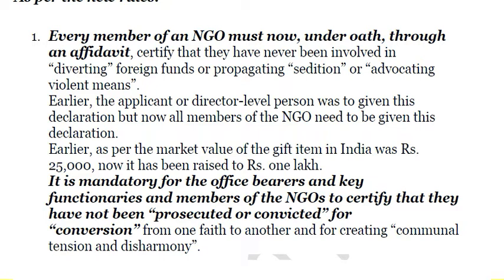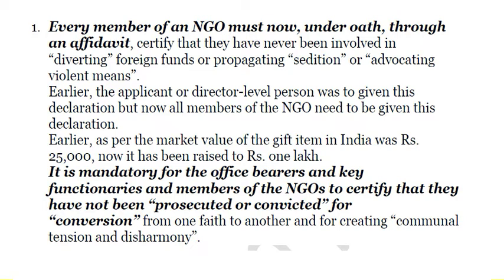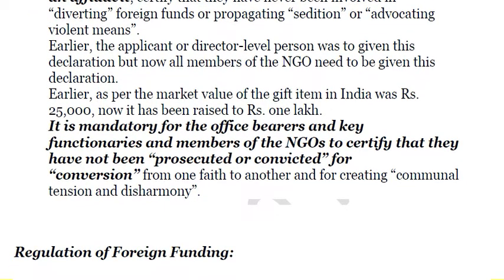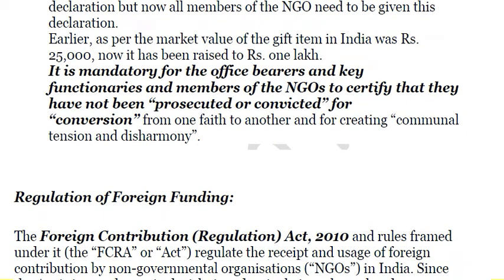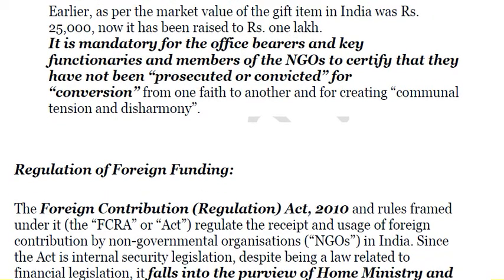Earlier, gifts received up to Rs. 25,000 did not need to be reported to the ministry, but now this limit has been raised to Rs. 1 lakh. So if a person engaged in an NGO receives a gift worth up to Rs. 1 lakh, they need not inform the Home Ministry or the respective agency. It is mandatory for office bearers, key functionaries, and members of NGOs to certify that they have not been prosecuted or convicted for conversion. Any conversion activity undertaken must be clearly voluntary on the part of the individual.